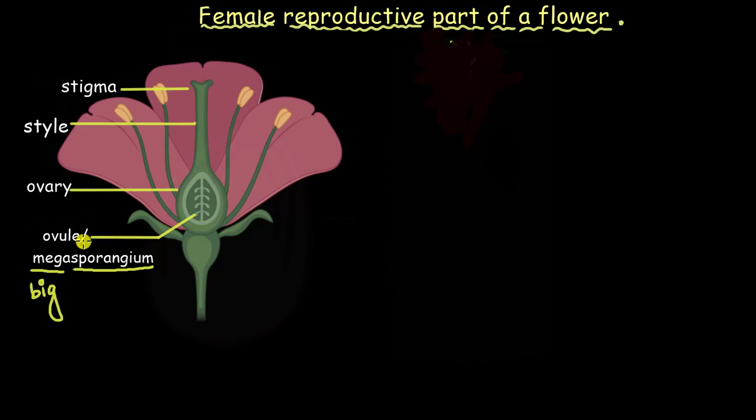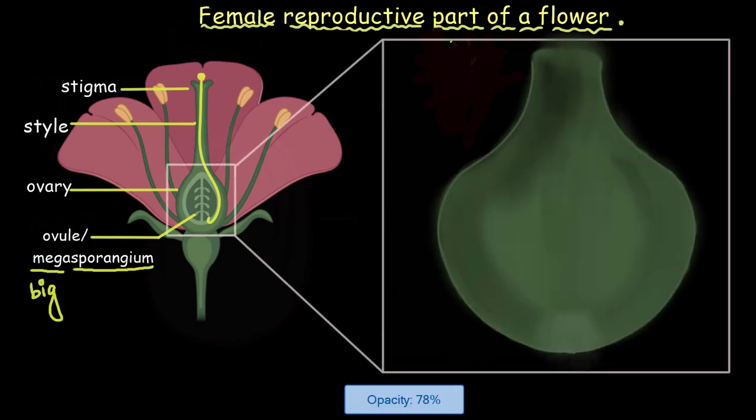Since the ovule is the area where the female gamete develops, the pollen tube from the pollen has to reach all the way down to the ovule so that fertilization can take place. To understand the fertilization better and to understand where exactly the fusion between the pollen tube and the ovule is taking place, we need to understand the structure of the ovule in detail. So let us now zoom in to the ovary and we will look into just one of the ovule.